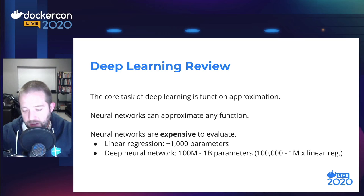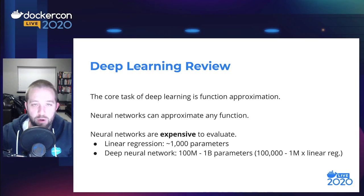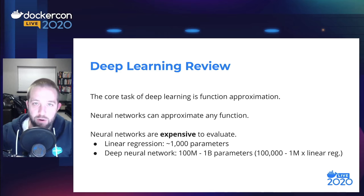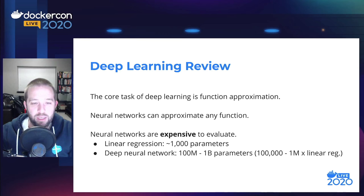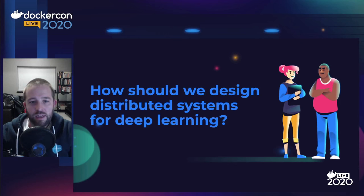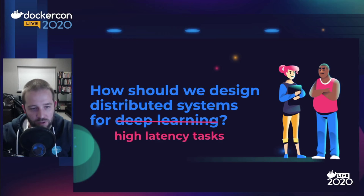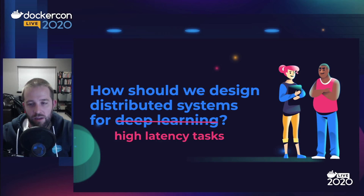We can think about this as: if we have a single data point to plug into a linear regression model, plugging that same data point into our deep neural network might take the same amount of time as evaluating 100,000 or a million linear regression models. So these neural networks give us a lot of power, but that comes at a cost. The question I want to tackle in this talk is how we should design distributed systems for deep learning — but really, this talk is about high-latency tasks. The ideas and designs are more widely applicable to any task that is very expensive, and in this case that expensive task is evaluating a neural network.